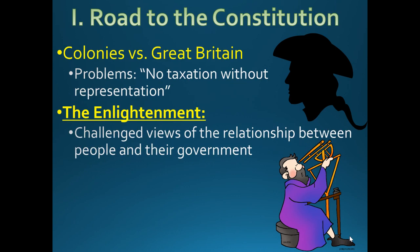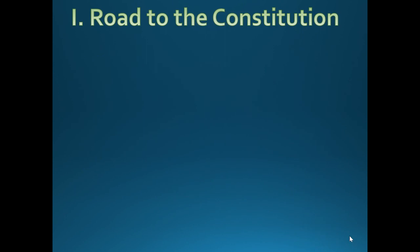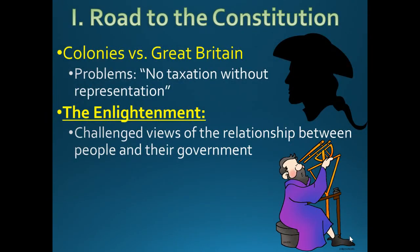One thing I taught you on Friday was that many ideas from the Enlightenment found their way into the Declaration of Independence. The Enlightenment was a time period back in the late 1600s to mid-1700s where thinkers had a lot of political ideas. With the scientific revolution they used rationality for science, but in the Enlightenment it was political — they challenged the views of the relationship between people and their government.